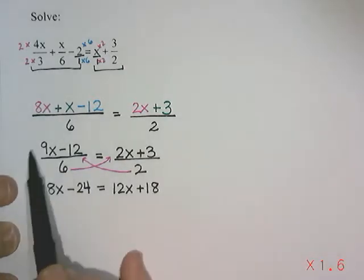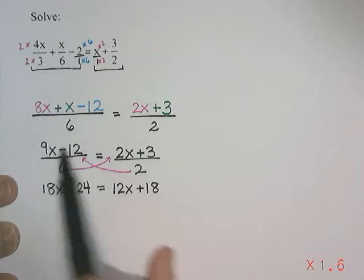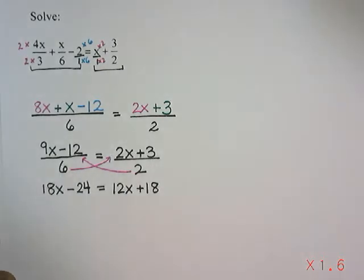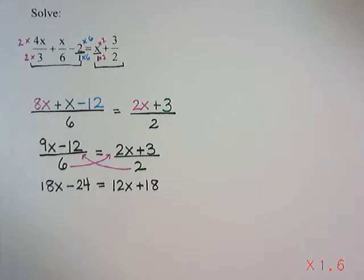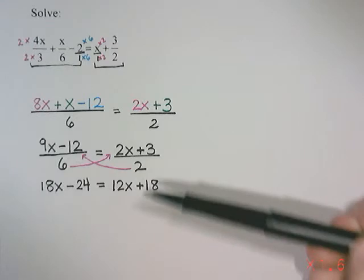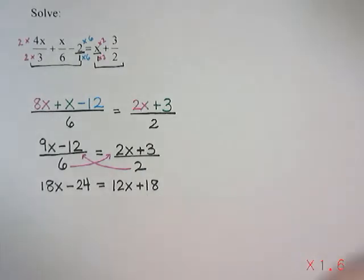So we took 9x minus 12 and multiplied it by 2. We took 2x plus 3 and multiplied that by 6. And now you'll notice we don't have any more fractions. So we found a way by getting a common denominator and cross-multiplying to eliminate those fractions so that we don't have to worry about them anymore.